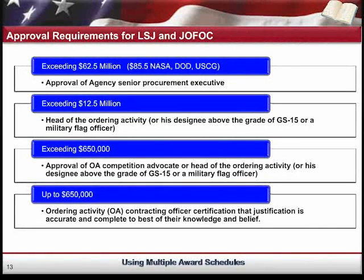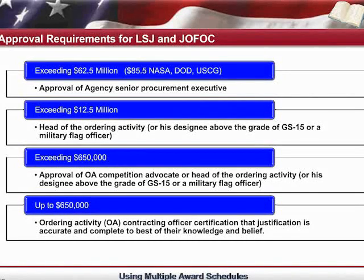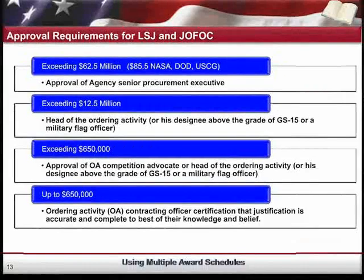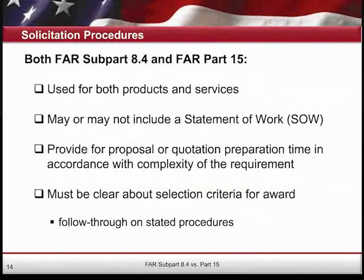Above the grade of GS-15 means SES level. If you're exceeding $12.5 million but under $62.5 million — or $85.5 million for NASA, DOD, or the Coast Guard — the head of the ordering activity or his designee above GS-15 grade, or a military flag officer, is the approval level for the limited source justification or JOFOC/J&A. If you're exceeding $62.5 million for all agencies other than NASA, DOD, and the Coast Guard — which are at $85.5 million — the approval of the agency senior procurement executive is the appropriate level for those documents.